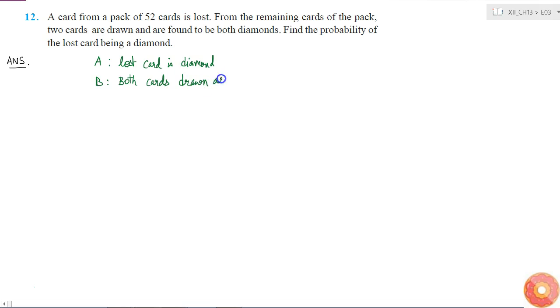We know that out of 52 cards, 13 are diamonds. So the probability that a lost card is diamond, P(A), is equal to 13 by 52, which equals 1 by 4. This means that the probability of the lost card not being a diamond is 1 minus 1 by 4, which is 3 by 4.